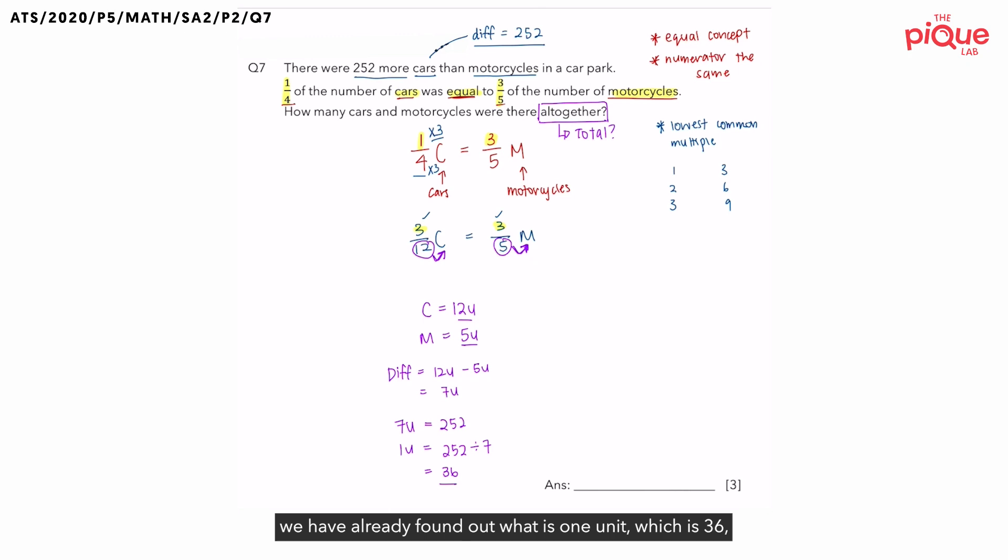From this question, we have already found out what is 1 unit, which is 36. But because we are looking for the total, we have to go back to our number of cars and motorcycles in terms of units. How can we find the total number of units here? The total number of units is very easy.